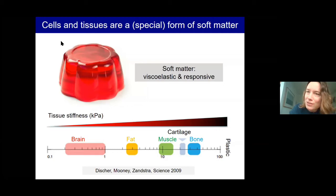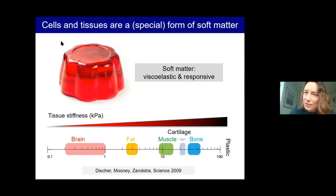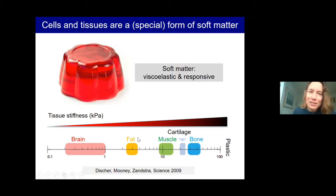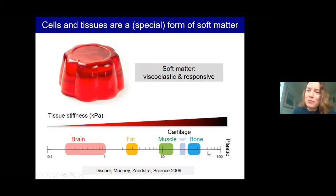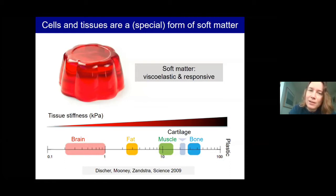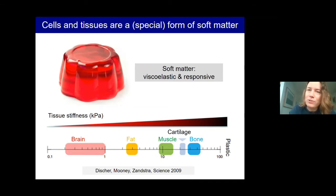When we look inside the cell and inside tissues, we find building blocks in exactly that size range. Cells and tissues are actually soft matter, but a very special form of it. Looking at the stiffness of tissues in the body, they are quite soft — our brain is the softest tissue, fat is a bit stiffer, and muscle, cartilage, and bone are even stiffer. These tissues are also viscoelastic and responsive to mechanical deformations.